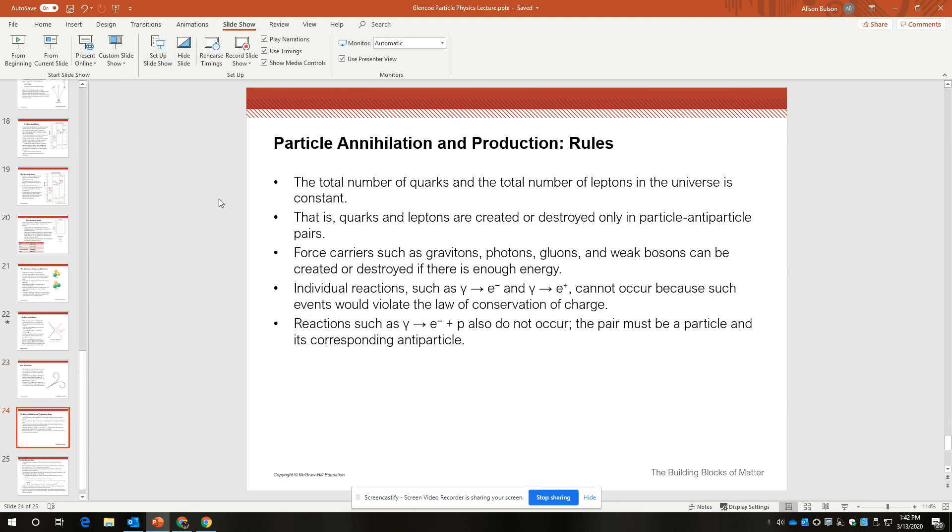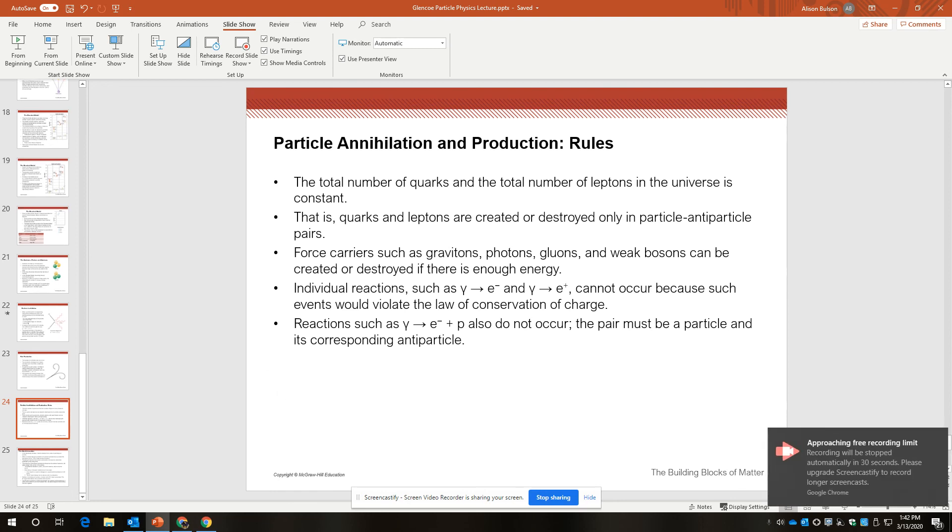So there are rules to this. There are rules to annihilation and production of particles. Here are the rules, and the rules are described in quantum mechanics. So the total number of quarks and the total number of leptons in the universe is constant. Quarks and leptons aren't created or destroyed in these particle-antiparticle pairs.